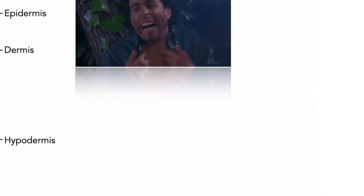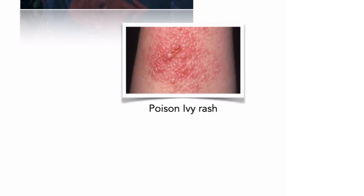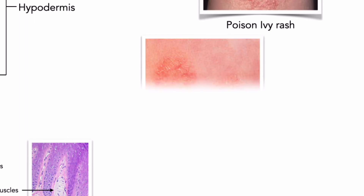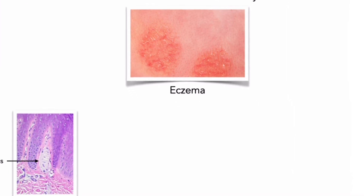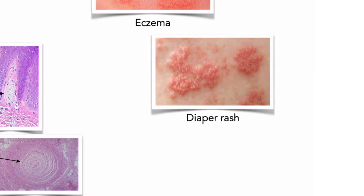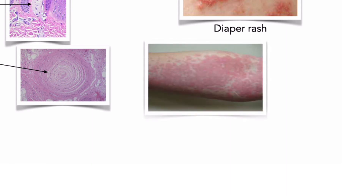Dermatitis has many forms. Contact dermatitis generally occurs in response to strong chemical irritants such as those produced by poison ivy, producing an itchy rash that may spread. Eczema can be triggered by temperature changes, the presence of fungi, chemical irritants, greases, detergents, or even stress, with hereditary and environmental factors promoting its development. Diaper rash is a localized dermatitis caused by moisture, irritating chemicals from fecal or urinary waste, and microorganisms, frequently the yeast Candida. Urticaria, also called hives, is an extensive allergic response to a food, drug, insect bite, infection, stress, or other stimulus.